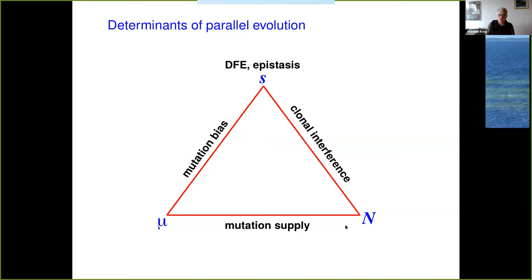The mutation rate and the population size together determine the supply of mutations. There is also the important effect of clonal interference, which filters out mutations of particularly strong effect in large populations. All these factors interact in the story I want to tell you. And the plasmid also appears in the story — otherwise I wouldn't be here — but you'll see that the plasmid is maybe not the most important thing.